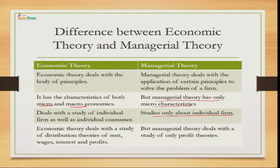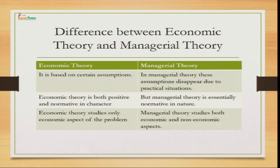Third, economic theory deals with the study of individual firms as well as individual consumers and the economy at large, whereas managerial theory studies only the individual firm. Fourth, economic theory deals with distribution theories of rent, wages, interest, and profit — for land we have rent theory, for labour we have wages theory, for capital we have interest theory, and for the entrepreneur we have profit theory — but managerial theory is only concerned with profit theories. Fifth, economic theory is based on certain assumptions, whereas in managerial theories these assumptions disappear because of the practical situation and applied approach.